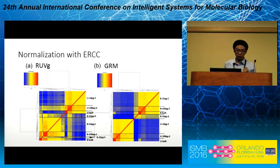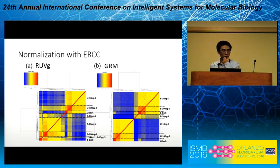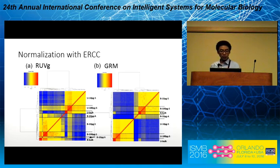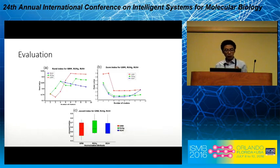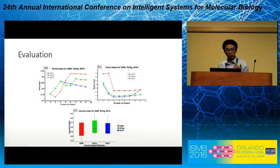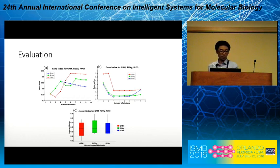We also applied normalization with the ERCC methods and compared ROVG and GRM. Generally speaking, they perform similarly, but there is one outlier for ROVG. Evaluating with the statistical indices, we find that GRM is slightly better than ROVR and ROVG for the Rand index and much better for the Dunn index, while the sensitivities look similar to each other.